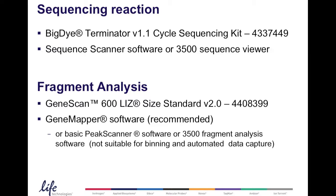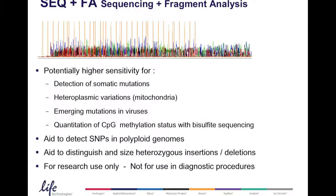For data analysis, we recommend the GeneMapper software. However, you can also use the PeakScanner software which is available for free for download on the Life Technologies website or the 3500 fragment analysis software that comes with the data collection software. However, the latter two softwares are not suitable for binning and automated data capture. Whereas in GeneMapper, you can set up defined panels and bins and export your data of interest into Excel-readable files.